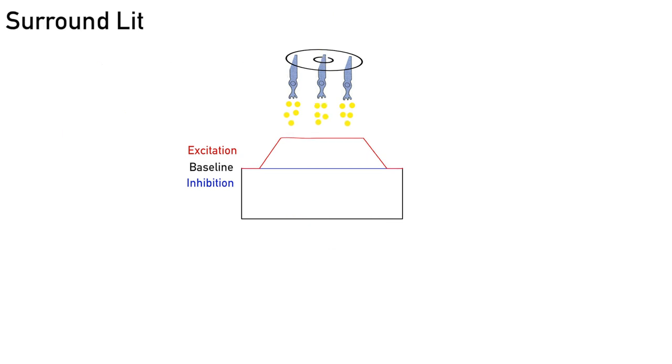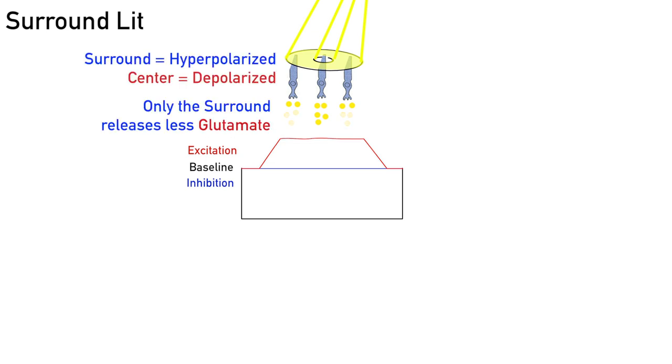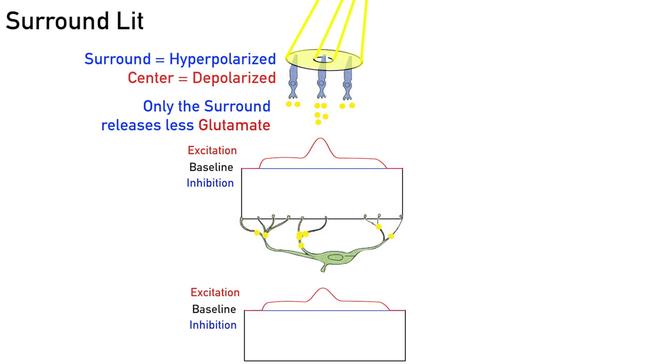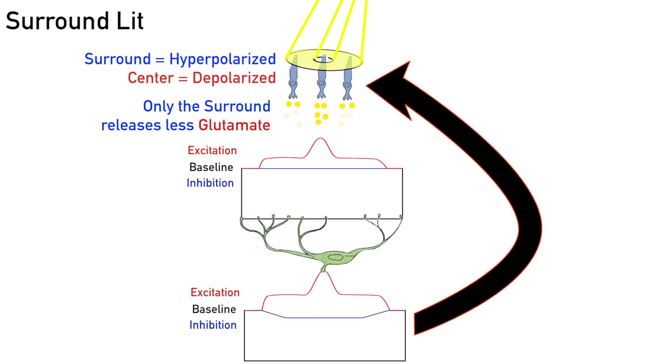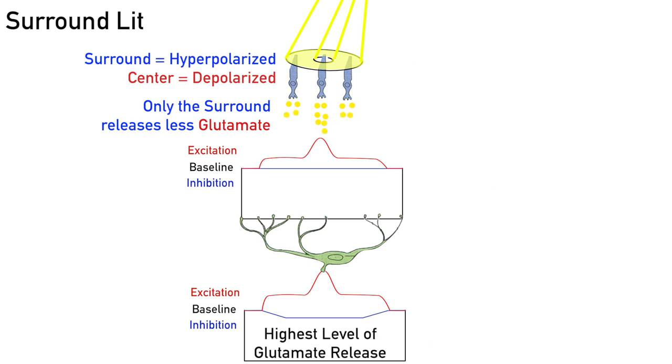Surround lit. When the light only hits the surround, all of the cones except the center become more negative and therefore the surround releases less glutamate than the center. The horizontal cell is receiving less excitation and therefore releases lower levels of inhibitory feedback. This allows all of the cells to release a little extra glutamate, especially the center, which was already greater than the rest. This is the maximum amount of glutamate released from the cone and therefore the lowest excitation for the on-bipolar cell.